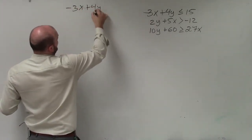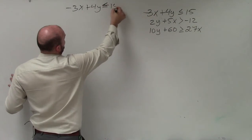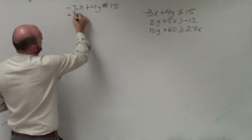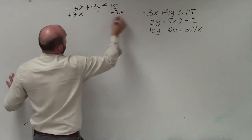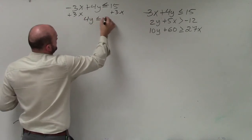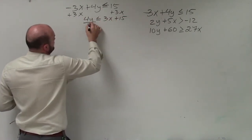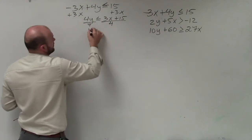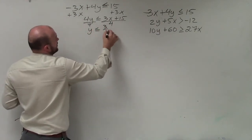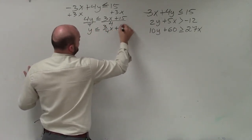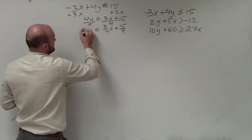Negative 3x plus 4y is less than or equal to 15. So to solve for y, I'll add 3x. And therefore, I'm left with 4y is less than or equal to 3x plus 15. Divide by 4. y is less than or equal to 3 fourths x plus 15 over 4. And I'm just going to leave that as a fraction here.